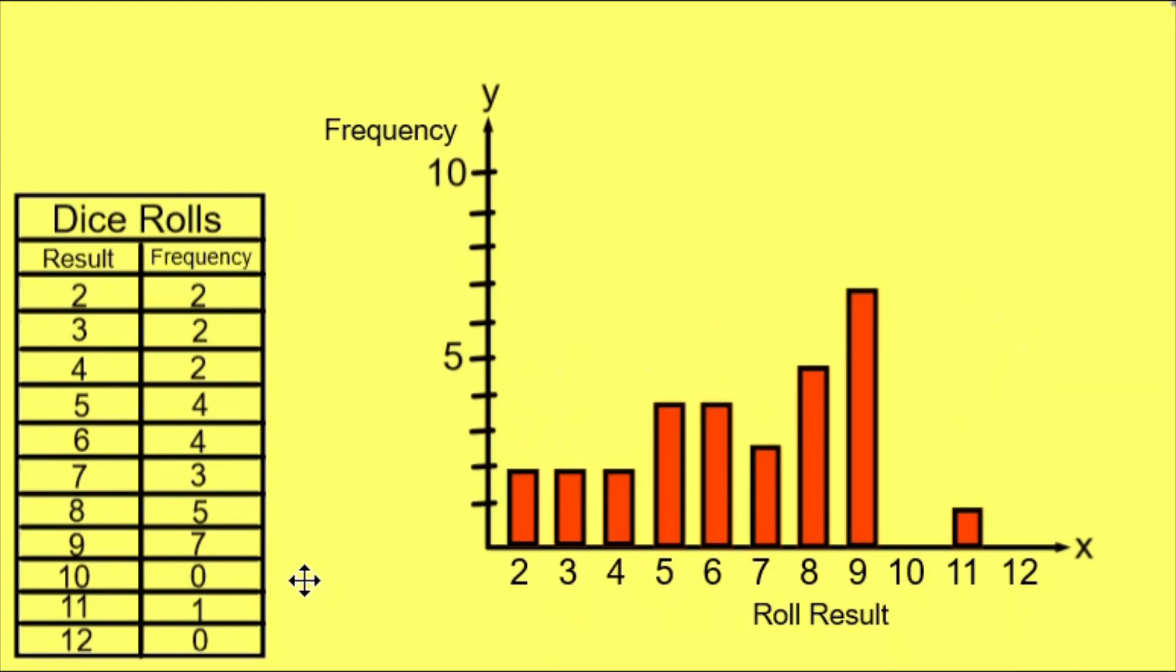Notice how there were no results of 10 or 12 when we rolled the dice this time. So there are no bars for 10 or 12, but I still label 10 and 12 on the axis because it was possible to get results.